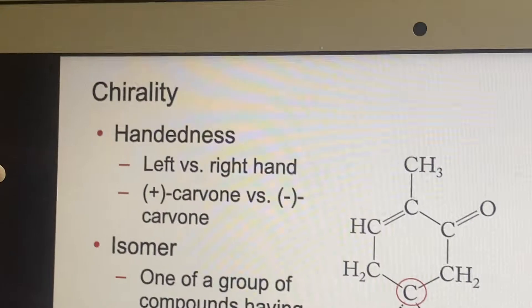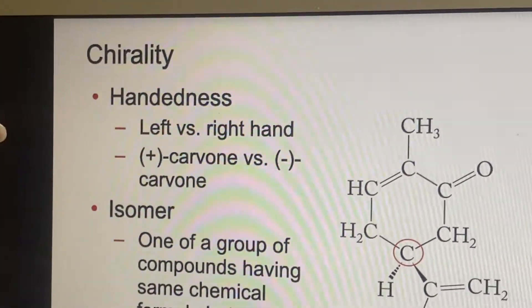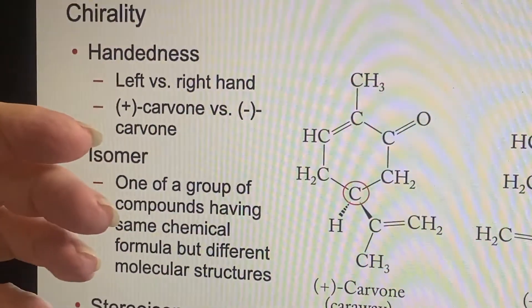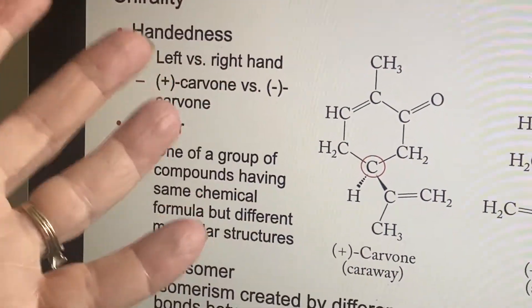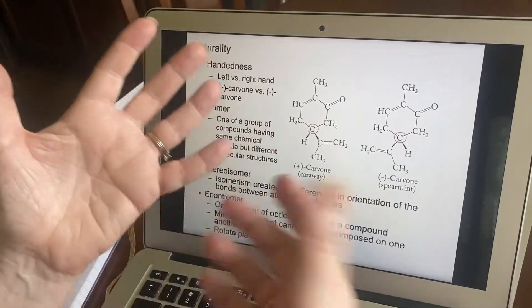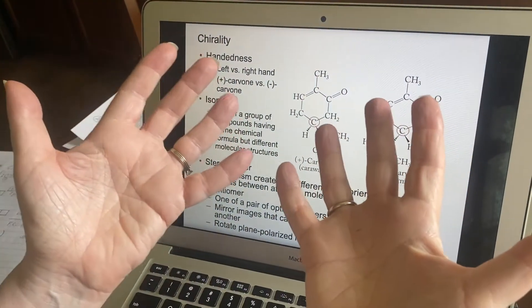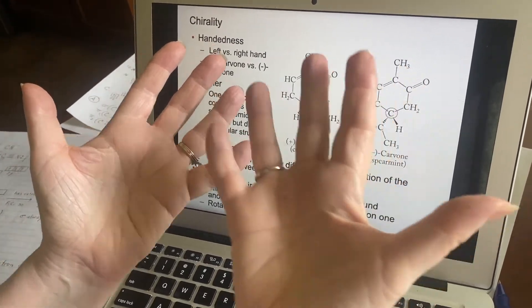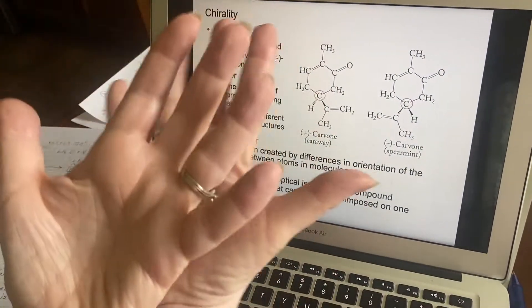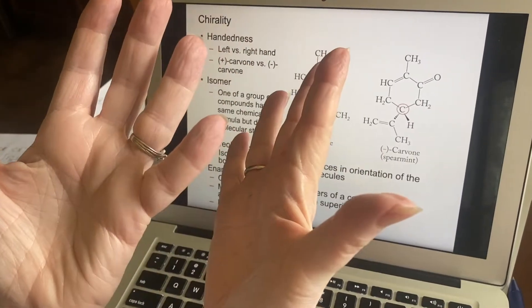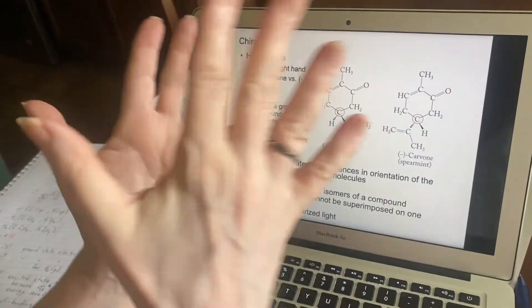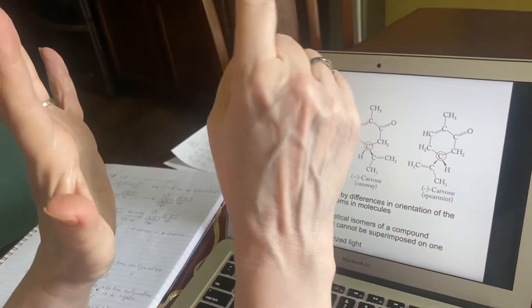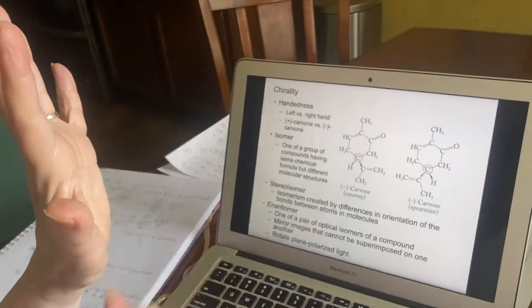Chirality is an interesting phenomenon that occurs whenever you have the possibility of what is called handedness. You can describe your hand as having a thumb and four fingers, but there is a difference between your left hand and your right hand. They both have a thumb and four fingers, but there is no way that you can superimpose these on each other except mirror images. If you put your left hand up in the mirror, it would look like the right hand of somebody who was inside the mirror.